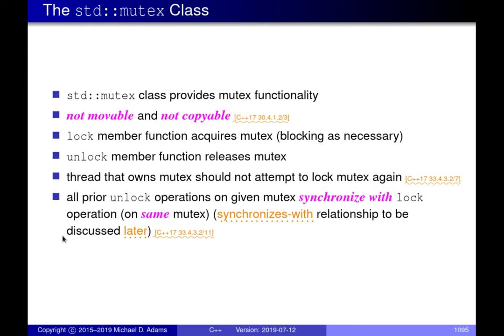The std::mutex class is not movable and not copyable. It provides a lock member function which acquires the mutex and blocks as necessary — if you try to acquire the mutex and some other thread is already holding it, you get put to sleep until you can successfully acquire it. Then there's a member function called unlock, which releases the mutex.